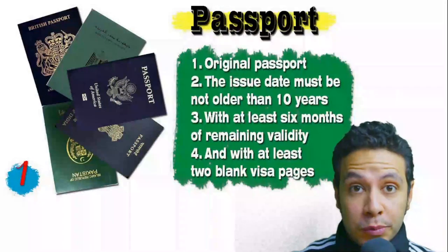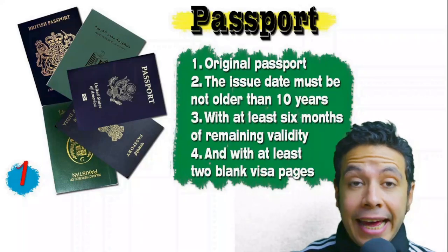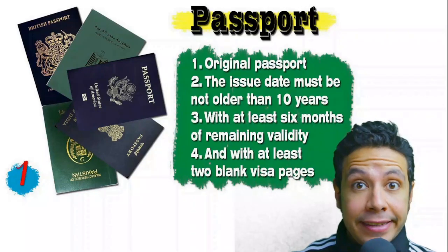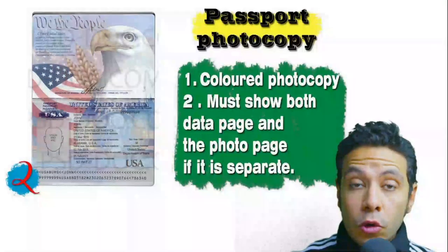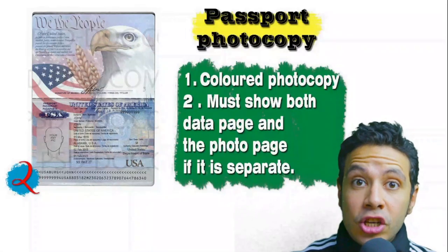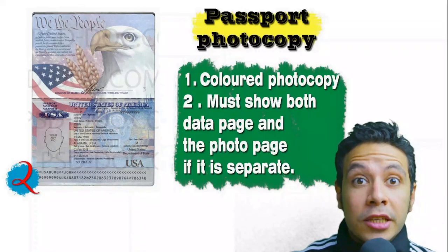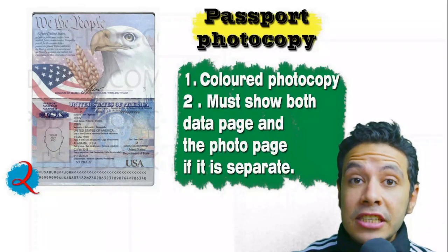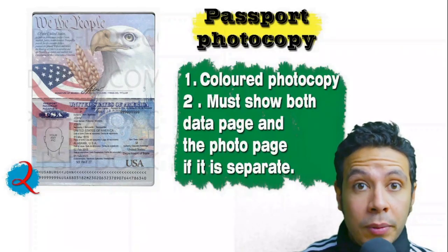Speaking about your passport: it must be original and must not be older than 10 years, with at least six months of remaining validity and at least two blank visa pages for stamps. In many cases you will also need a passport photocopy — one copy or more, preferred to be colored, showing both the data page and photo page. In some cases you may need to photocopy every single page.